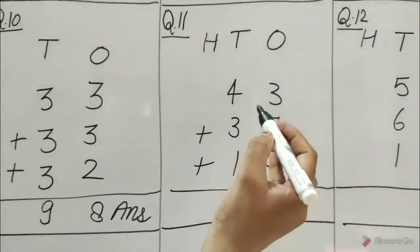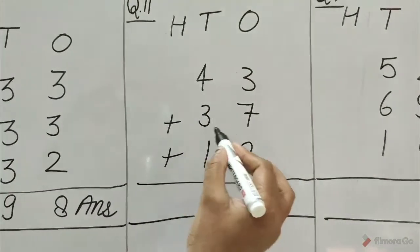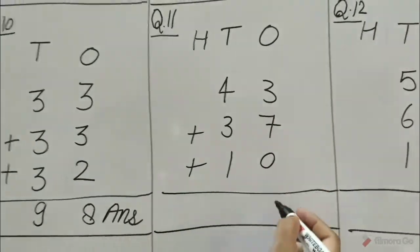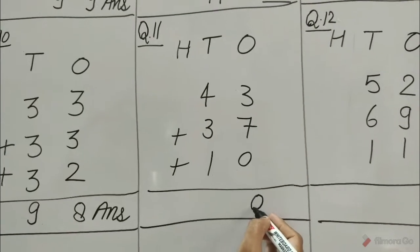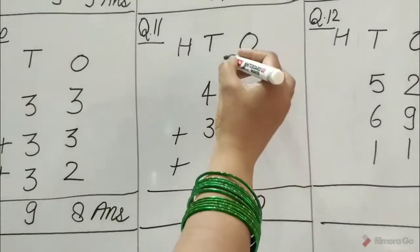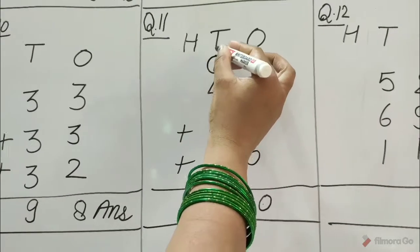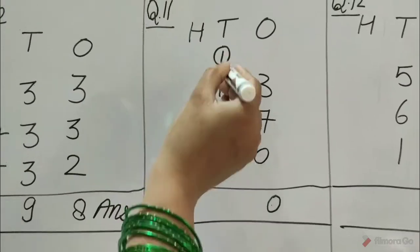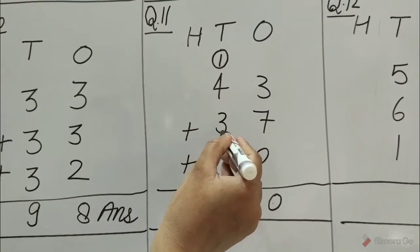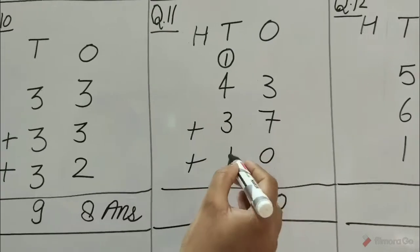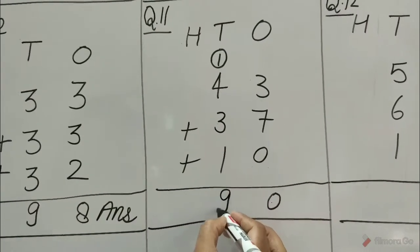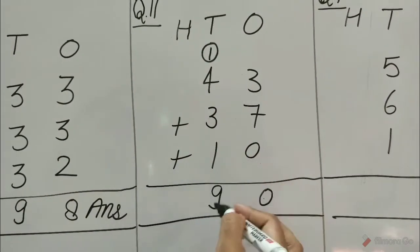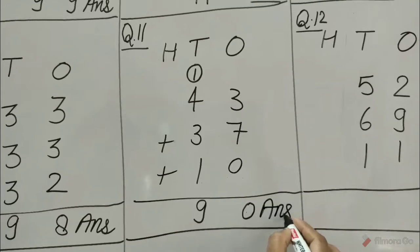Question number 11: 43 plus 37 plus 10. 3 plus 7 is equal to 10. Write 0 under ones and carry 1 at tens place. Now add tens: 1 plus 4 is equal to 5, 5 plus 3 is equal to 8, 8 plus 1 is equal to 9. So, 43 plus 37 plus 10 is equal to 90.